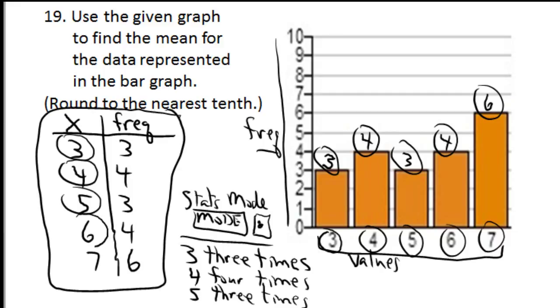And 6 four times. And 7 six times. When you're done, you've entered 3, 3 plus 4 is 7, plus 3 is 10, plus 4 is 14, plus 6 is 20. So there are 20 values all together.